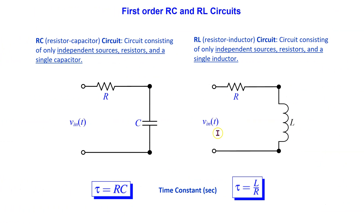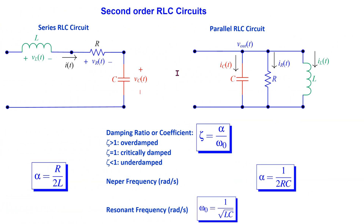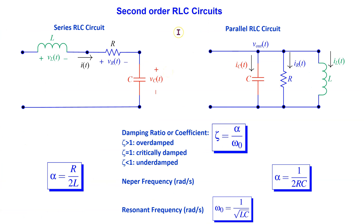Recall that the response of first-order RC and RL circuits is characterized in terms of the time constant, having units of seconds. The time constant is R times C for an RC circuit and L over R for an RL circuit. Series and parallel RLC circuits are governed by second-order differential equations. For such circuits, the response is characterized in terms of the damping ratio, which is the ratio of the neper frequency alpha to the resonant frequency omega 0.